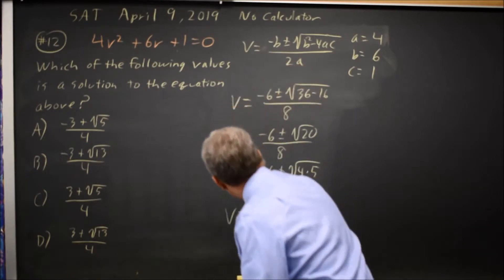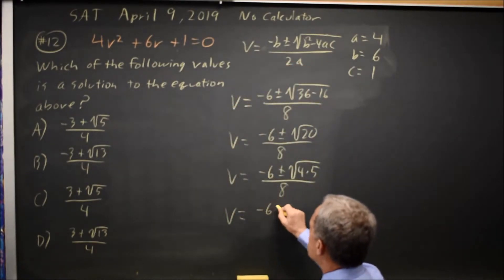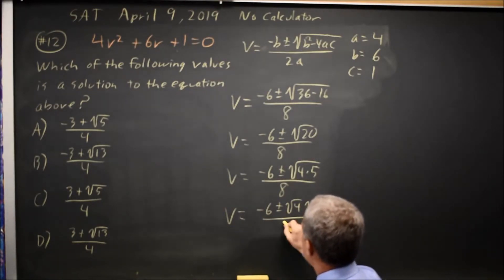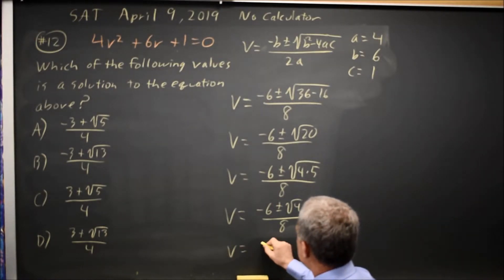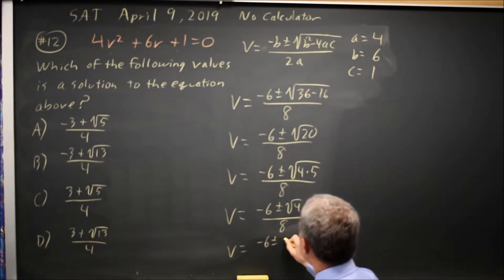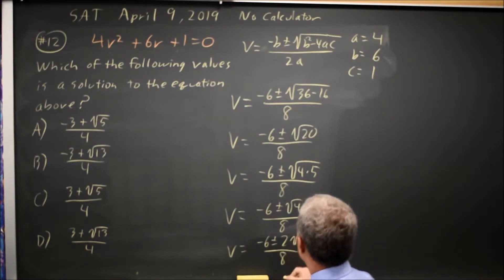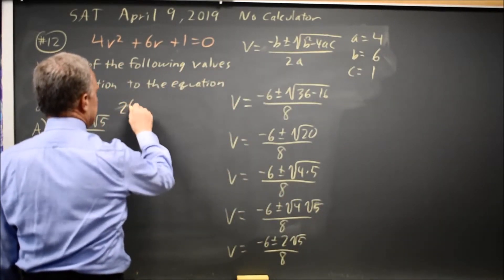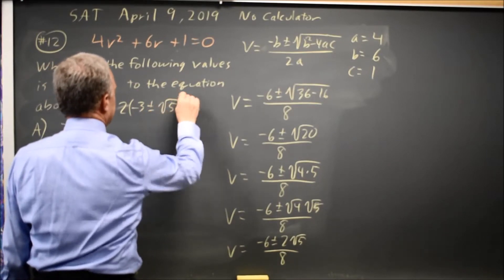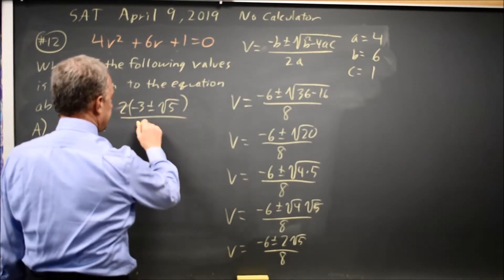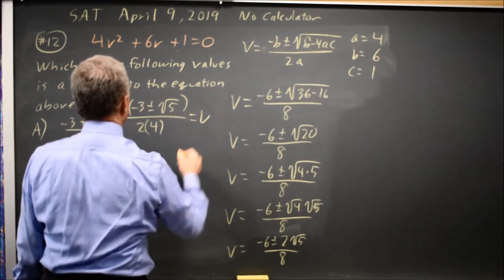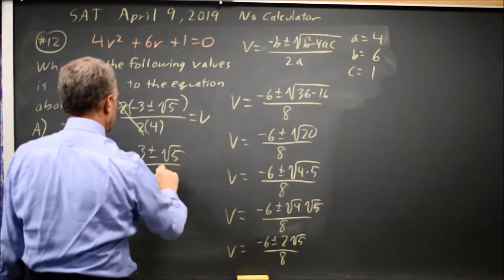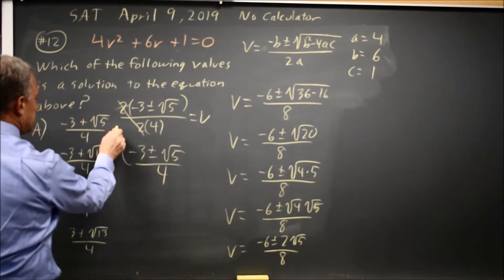So v equals negative 6 plus or minus root 4 times root 5, over 8. Root 4 is 2. I'm going to factor out a 2 from the numerator — that's 2 times negative 3 plus or minus root 5 — and factor out a 2 from the denominator, 2 times 4. So 2 over 2 is 1, and that simplifies to negative 3 plus or minus root 5, over 4. That matches choice A.